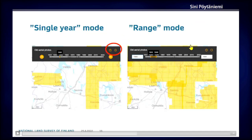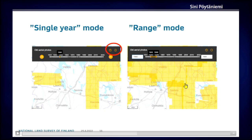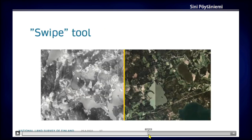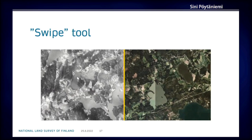The web client has two modes: you can select one certain year, or you can select a wider time range. The index map updates automatically according to the selection. We also have a swipe tool, so you can compare two selected aerial photos from different times.